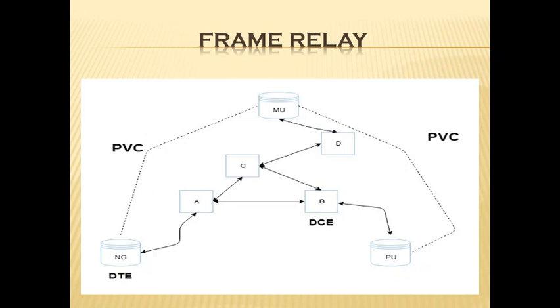The image for Frame Relay is shown here. This image consists of three DTEs — Nagpur, Pune, and Mumbai — and four DCEs labeled A, B, C, and D, all interconnected with each other.